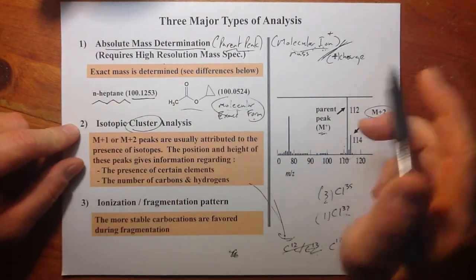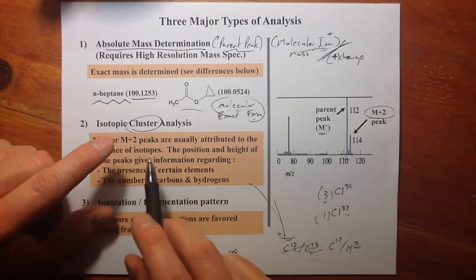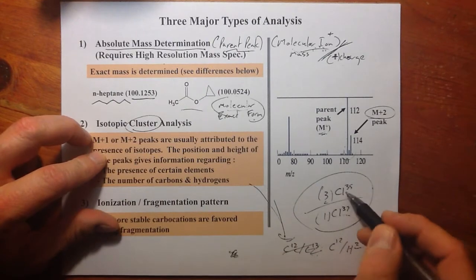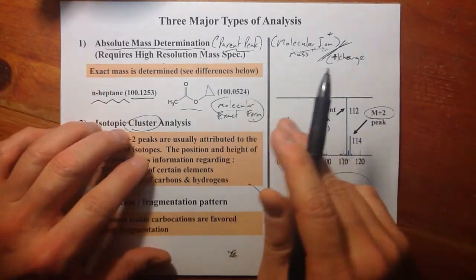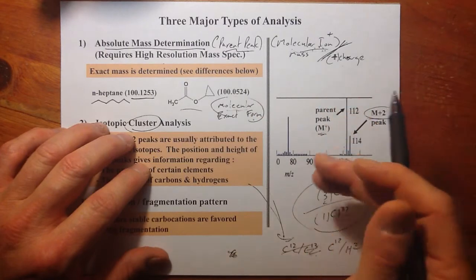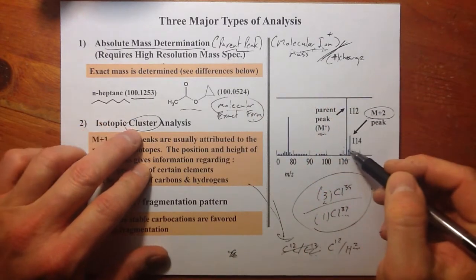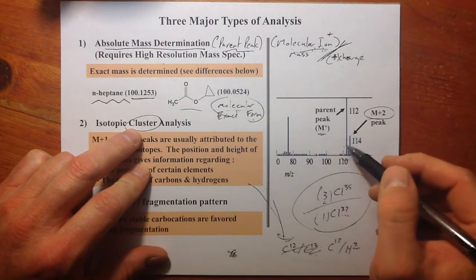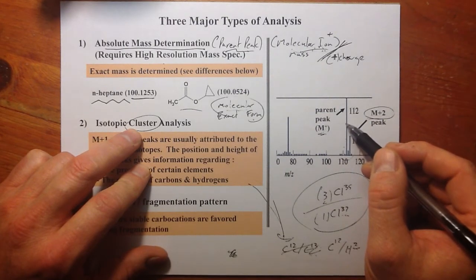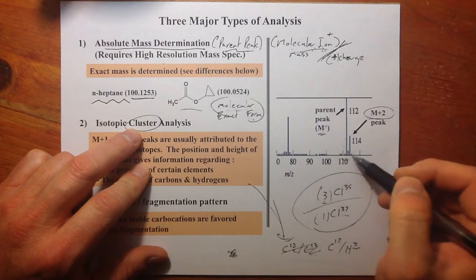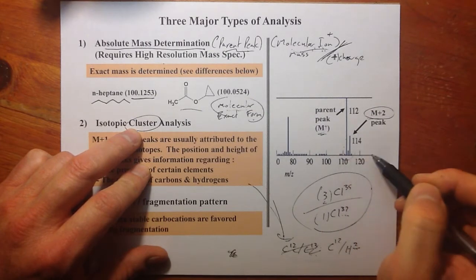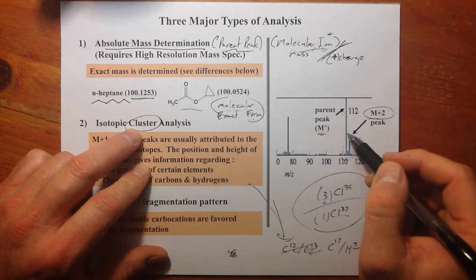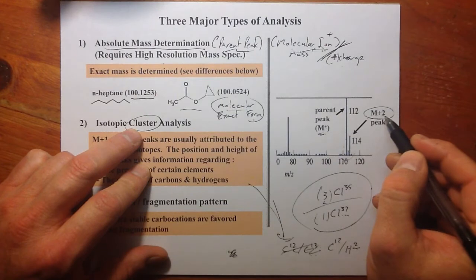The second is isotopic cluster analysis. Now I'm not going to talk too much about this, outside of some important ratios. Around the parent peak again, where the molecule has just lost an electron, we typically do this analysis. And we can see sometimes ratios between what's the parent peak, the M plus peak, and some smaller peaks that come into the high mass side or the high M/z value side of this parent peak, what we call the M plus 2 peak.